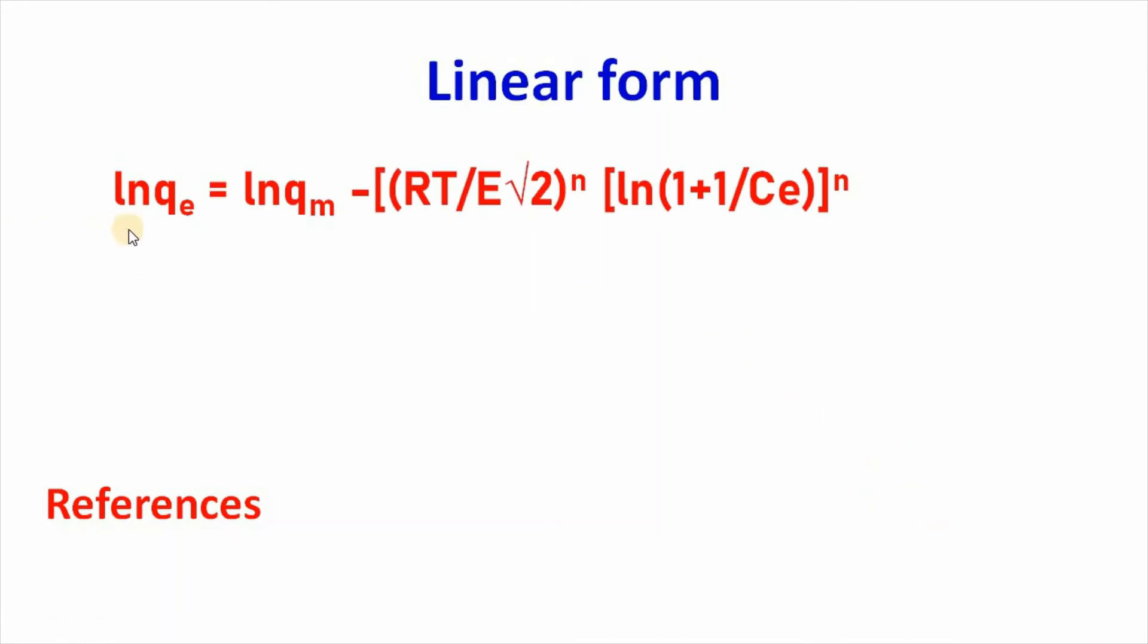The linear form can be written as ln q equal to ln qm minus RT divided by E root over 2 to the power n into ln(1 plus 1 divided by C) to the power n.